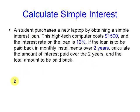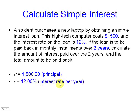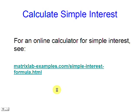So in this case, P, the principal, is $1,500. R is the interest rate per year, 12%, and T, the time in years, is 2. Let's use a calculator for that purpose.